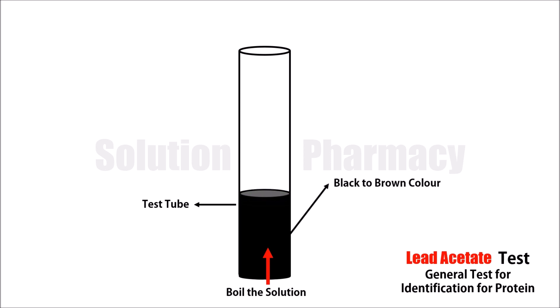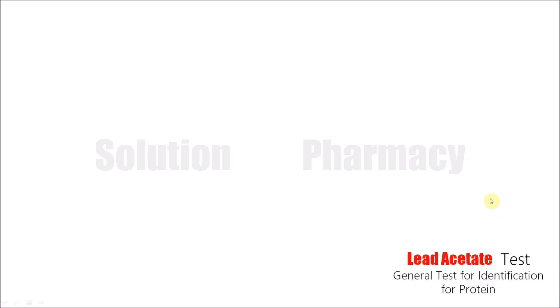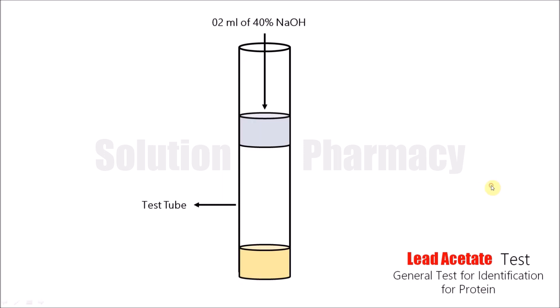First of all, we will take a test tube, then we have to add 2 ml of the test solution. Then we have to add 2 ml of 40% NaOH solution in the test tube. After adding NaOH solution, add 0.5 ml of lead acetate solution in the same test tube. Here the concentration of the lead acetate solution is 20%.